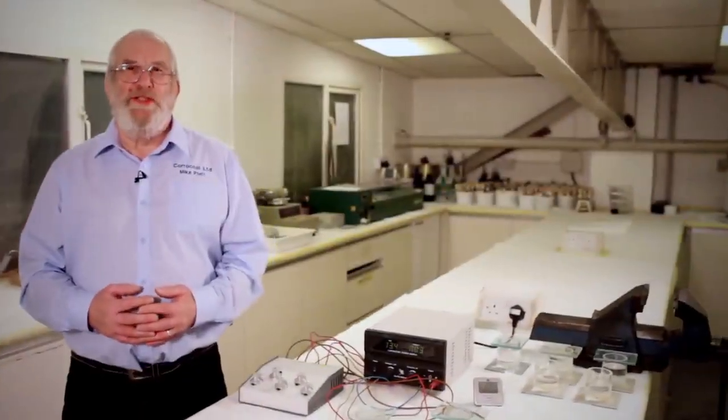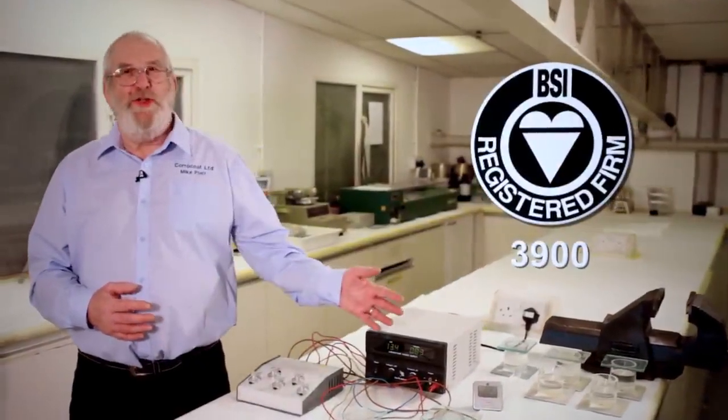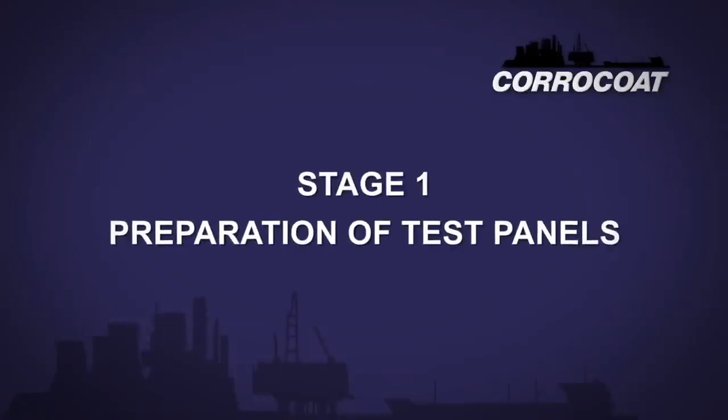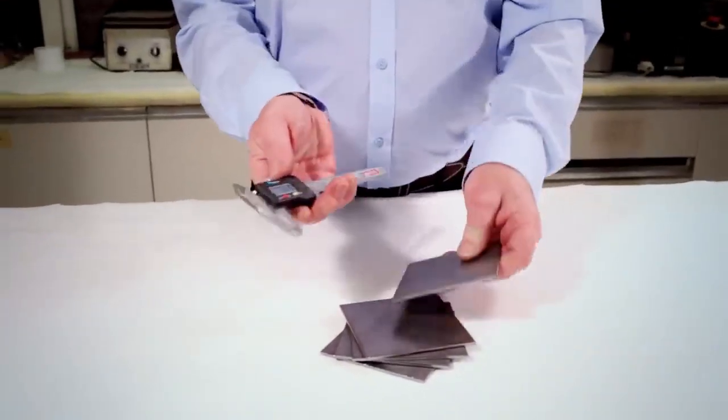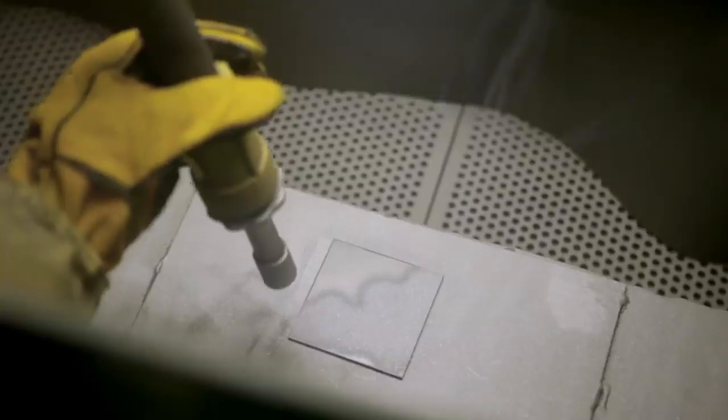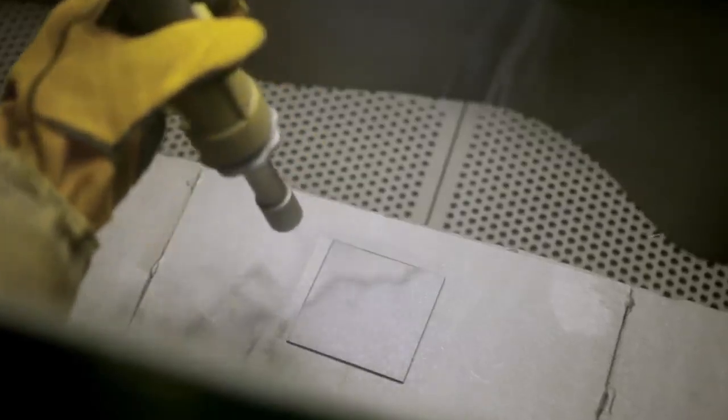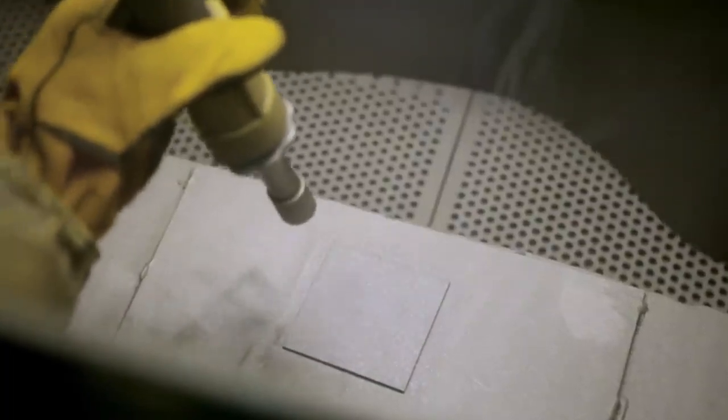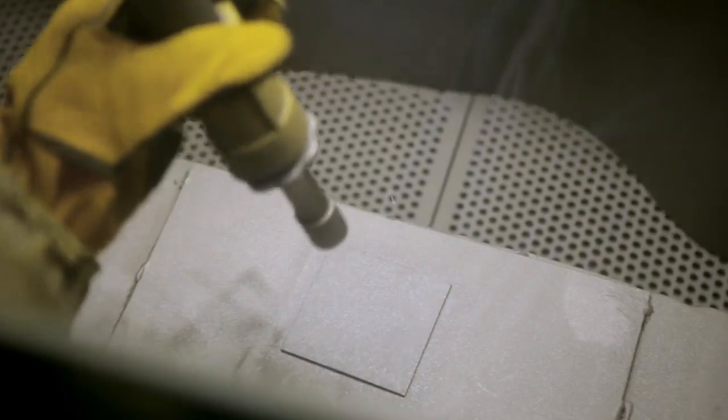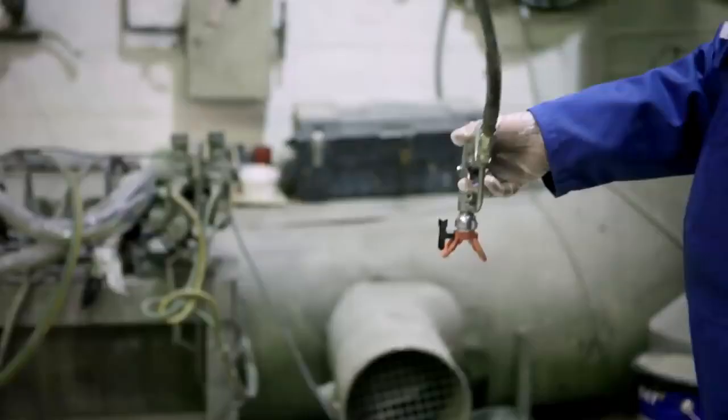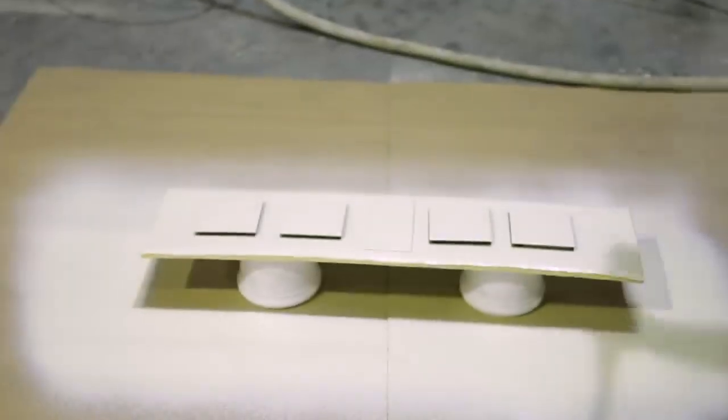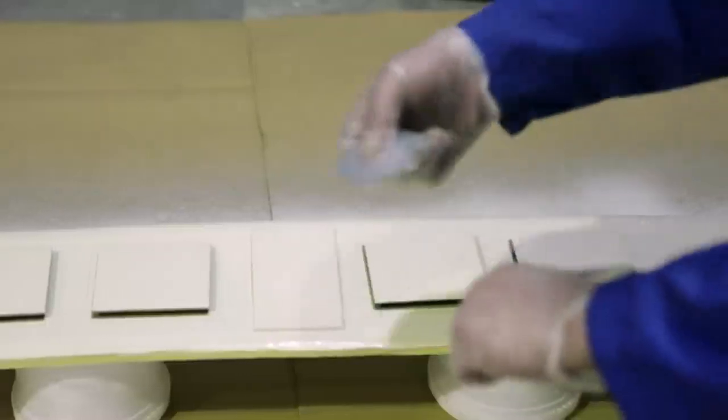The cathodic disbondment test is generally carried out in accordance with British Standard 3900. The test is carried out on mild steel test panels, 3mm thick, prepared by abrasive grit blasting to a cleanliness standard of SA 2.5 in accordance with British Standard ISO 8501-1, and vacuumed to remove all grit blast residues and dust. The plate is prepared to the specification and the coating applied to the manufacturer's recommendations.